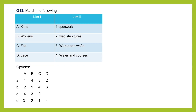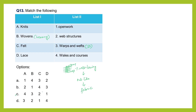Question number 13: match the following. List 1 has knits, wovens, felt, and lace; List 2 has keywords to match. For wovens, we have a set of longitudinally running yarns called warp yarns and another set running horizontally called weft yarns. In the process of interlacing at right angles, they produce a fabric. So for wovens, the answer is warp and weft - that is option 3. So we can guess the answer should be C.